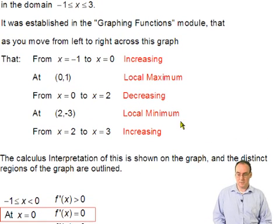Just to make a note of that, from x = -1 to x = 0, the graph is increasing. At (0,1), there's a local maximum. From x = 0 to x = 2, the graph is decreasing. That's between the max and the min.